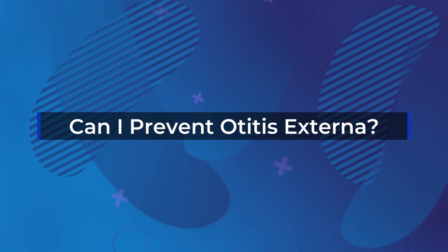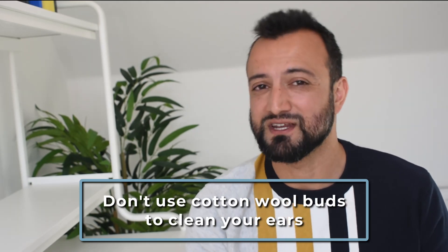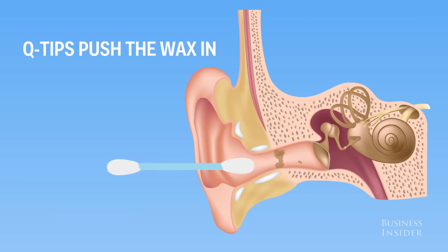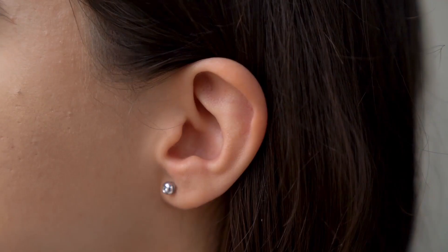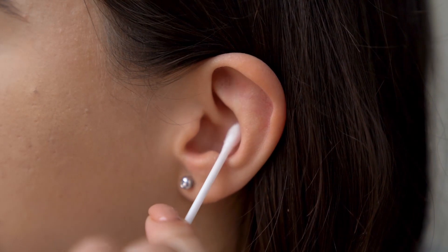Some people get otitis externa once in a blue moon but for some people it's a regular annoyance and nuisance. In this case especially, there are things you can do to prevent them occurring in the first place or to prevent a simple otitis externa becoming a chronic problem. Don't use cotton wool buds to clean your ears. We used to get taught in medical school that the smallest thing that should go in your ear is your elbow. The moral is: don't put anything in your ear, period — even to clean it. It damages and irritates the delicate skin, and it can push wax further in too. Wax is designed to come out by itself when you wash and sleep.